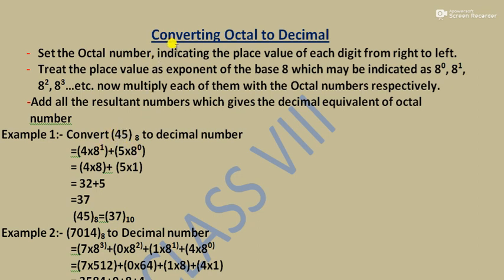This represents the place value of each digit from right to left. The place value of 5 is 0 (rightmost), so 5 × 8⁰ = 5 × 1 = 5. The place value of 4 is 1, so 4 × 8¹ = 4 × 8 = 32. Adding both: 32 + 5 = 37.